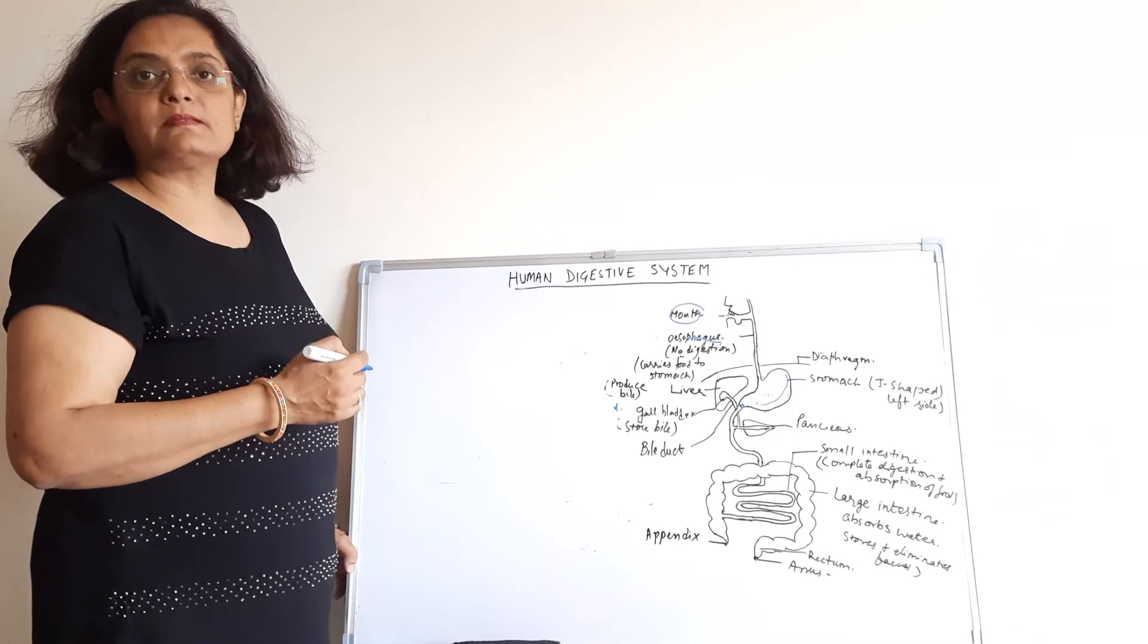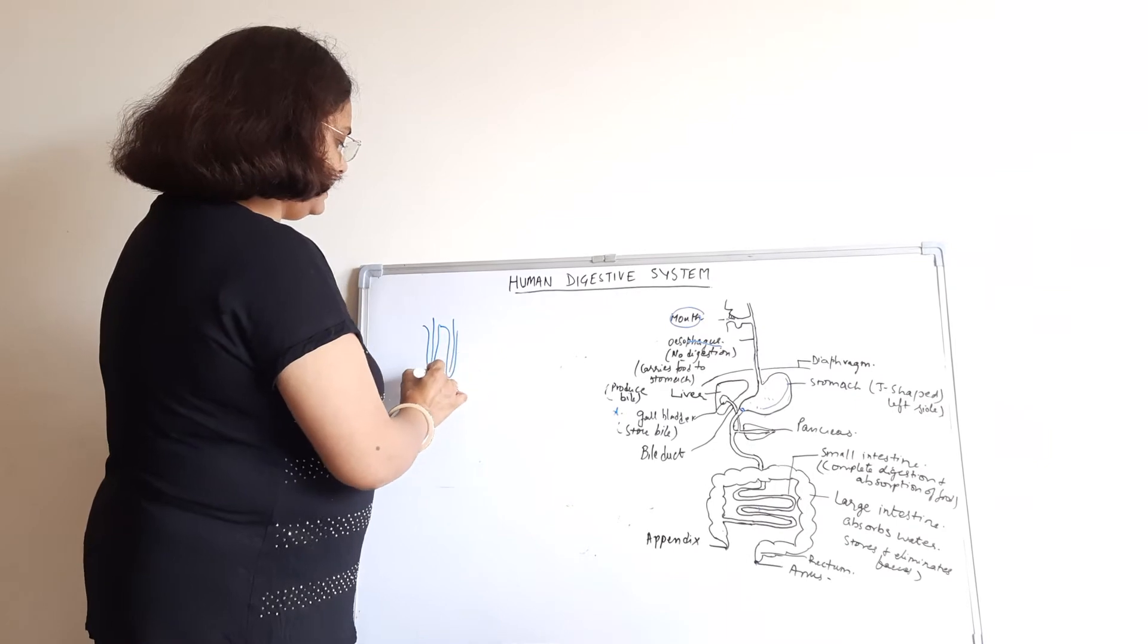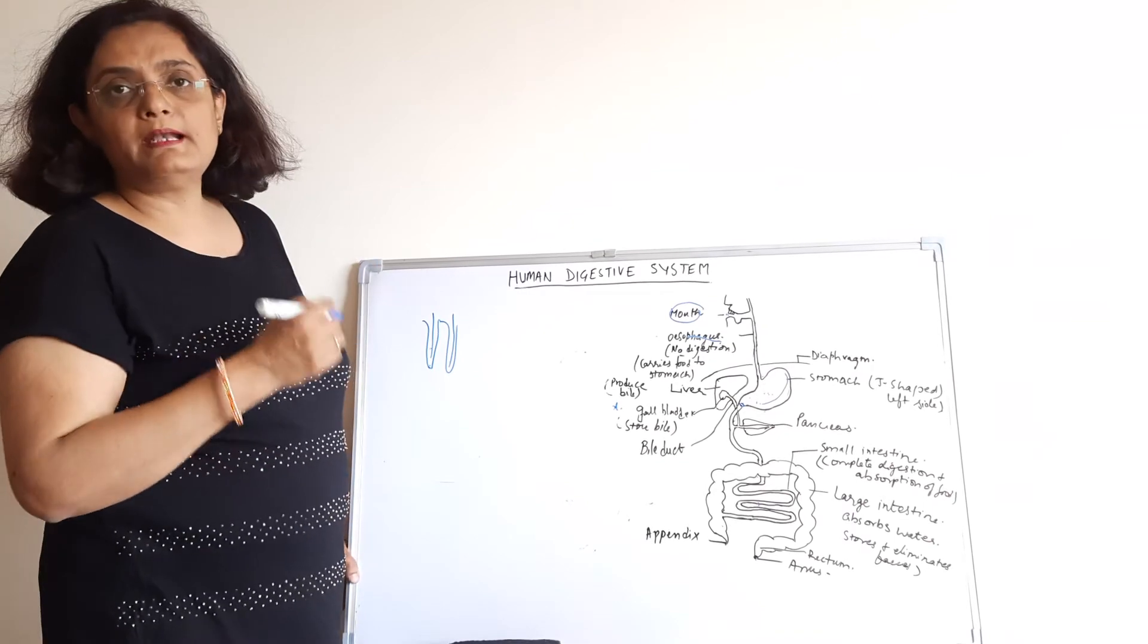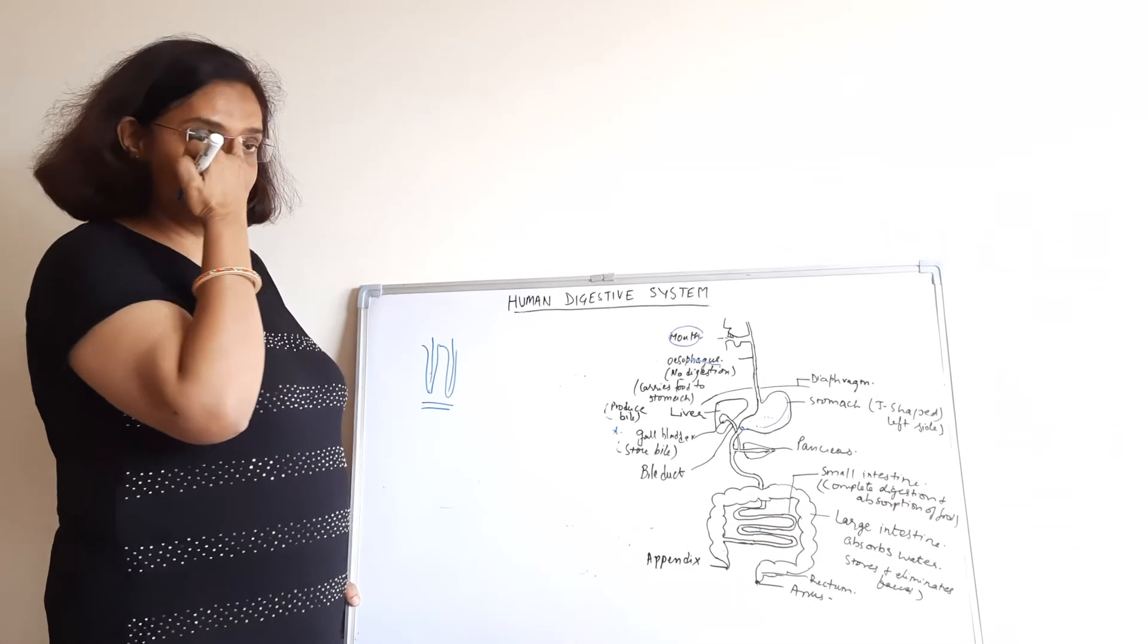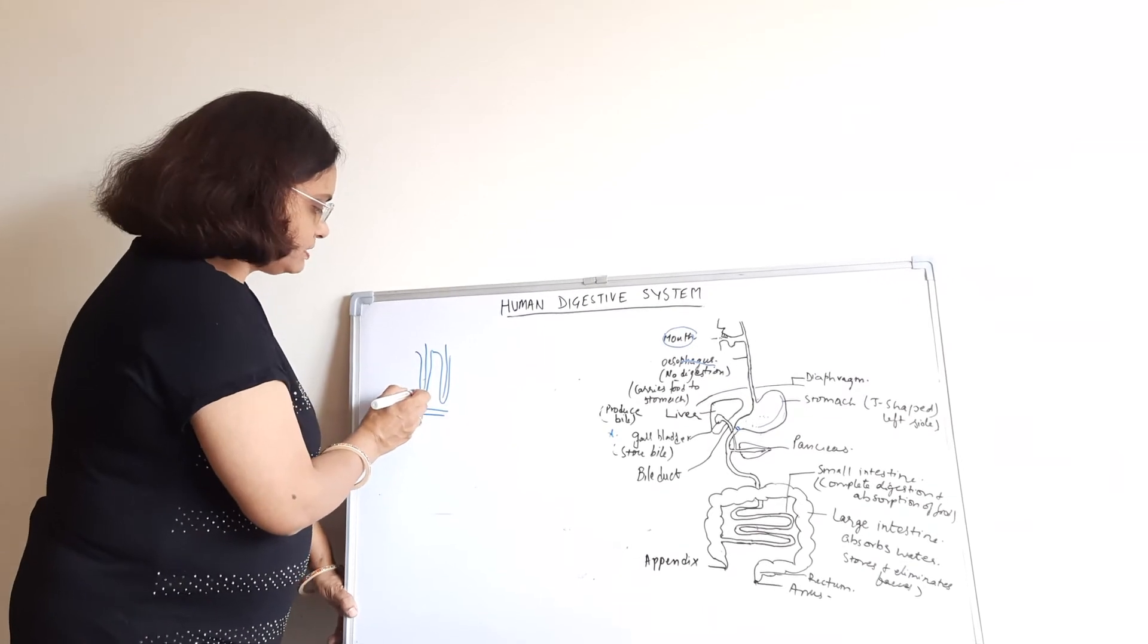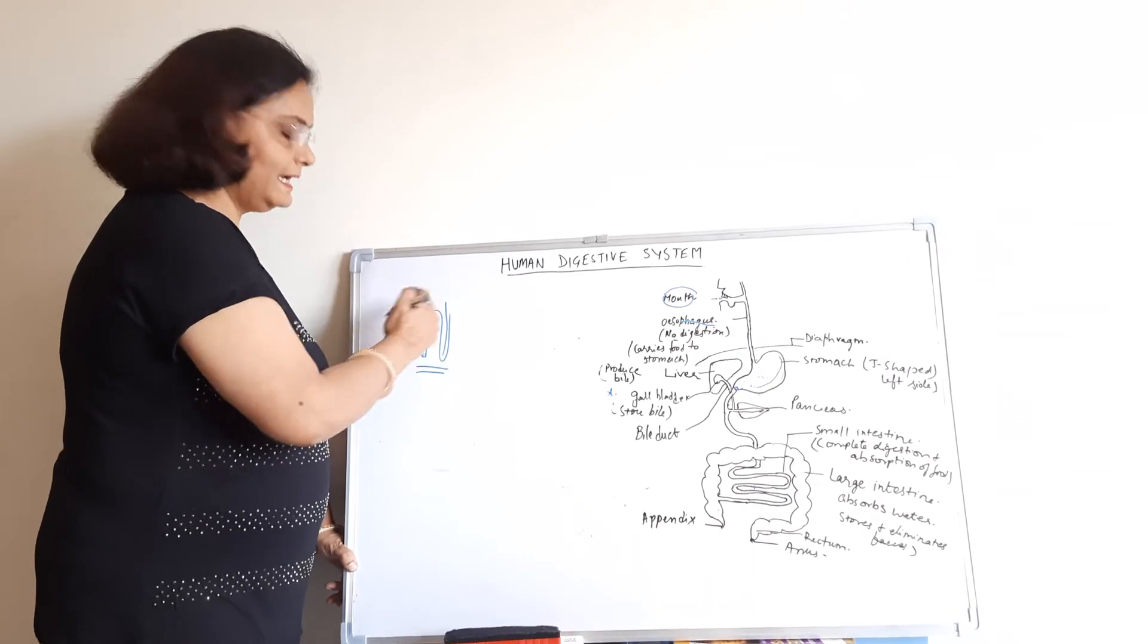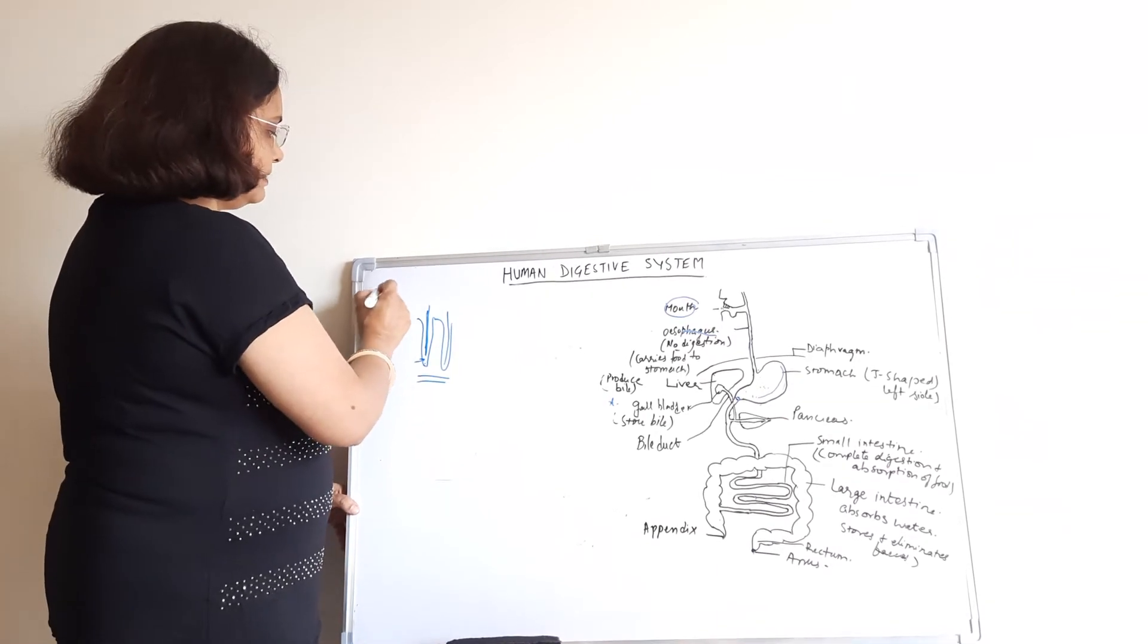After digestion, absorption takes place in the intestine. In the intestine there are villi. They are finger-like projections that are present in the wall of the intestine, and they are richly supplied by blood vessels. These villi increase the surface area of the intestine which helps in rapid absorption. The food molecules cross the intestinal wall and enter the blood capillaries. So, the food enters the blood stream.